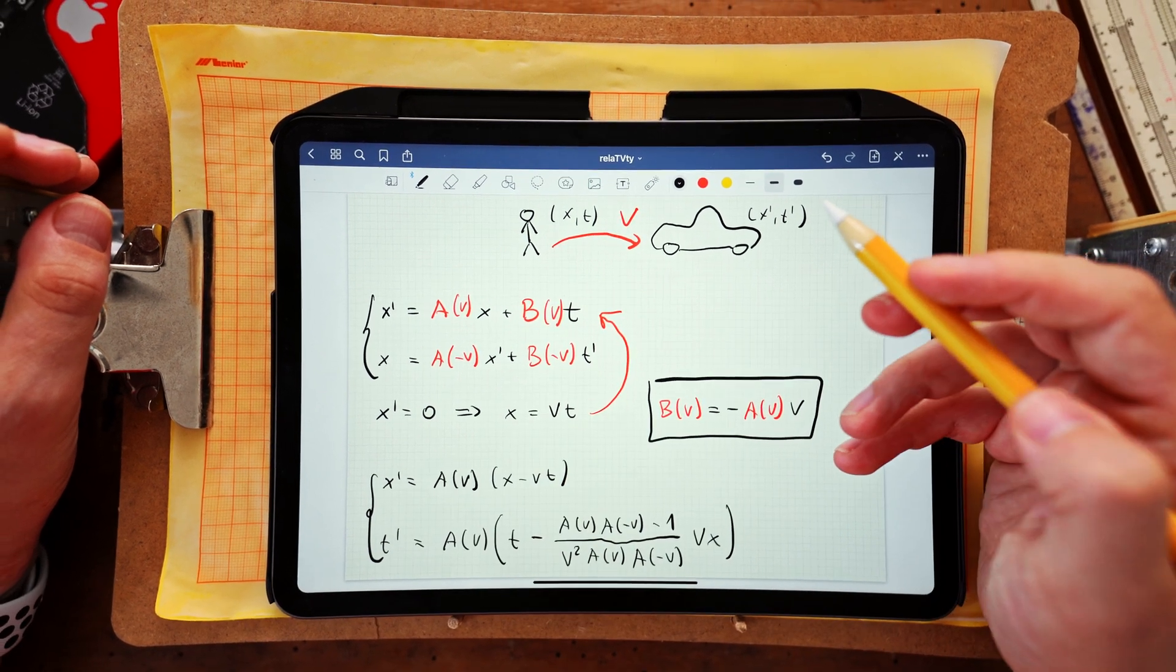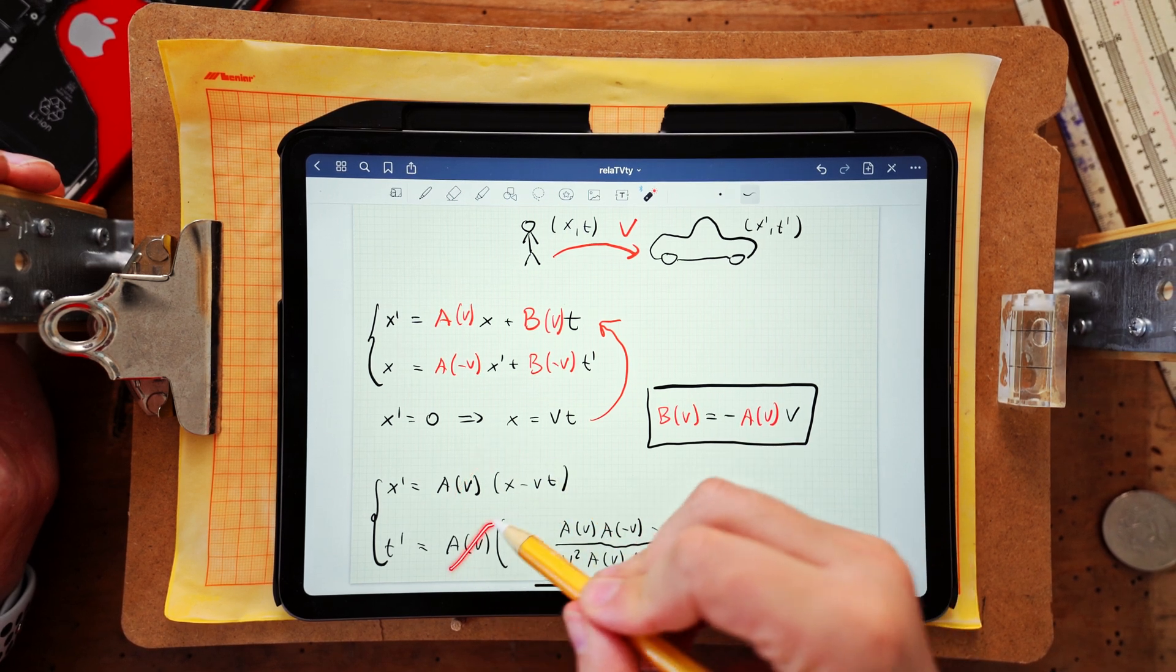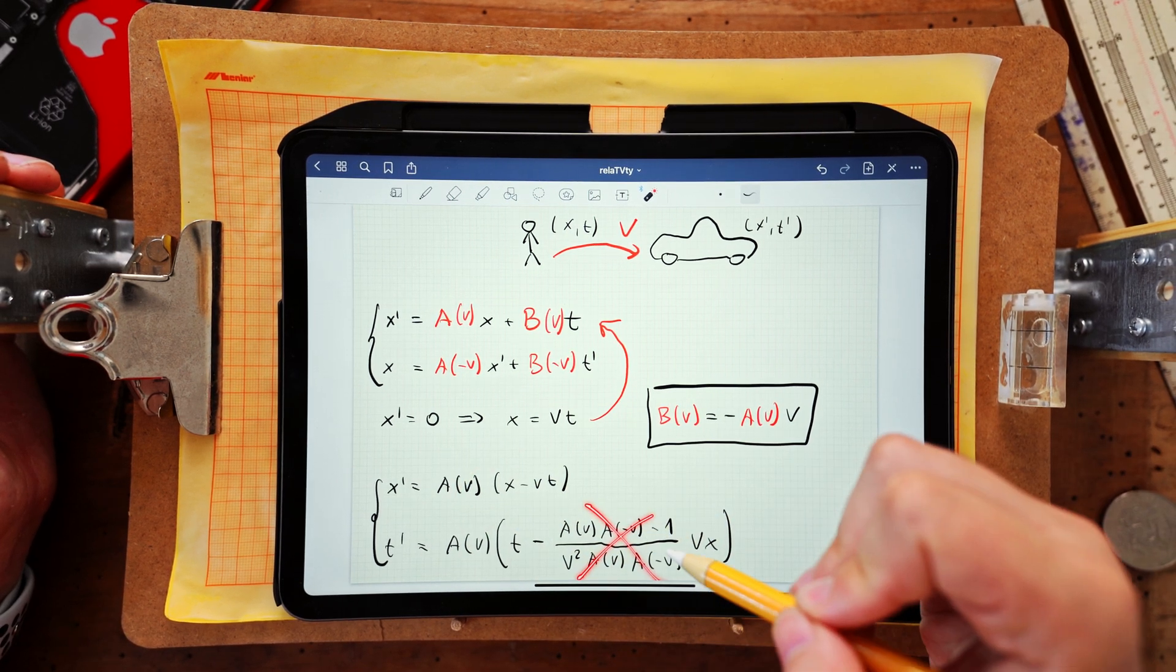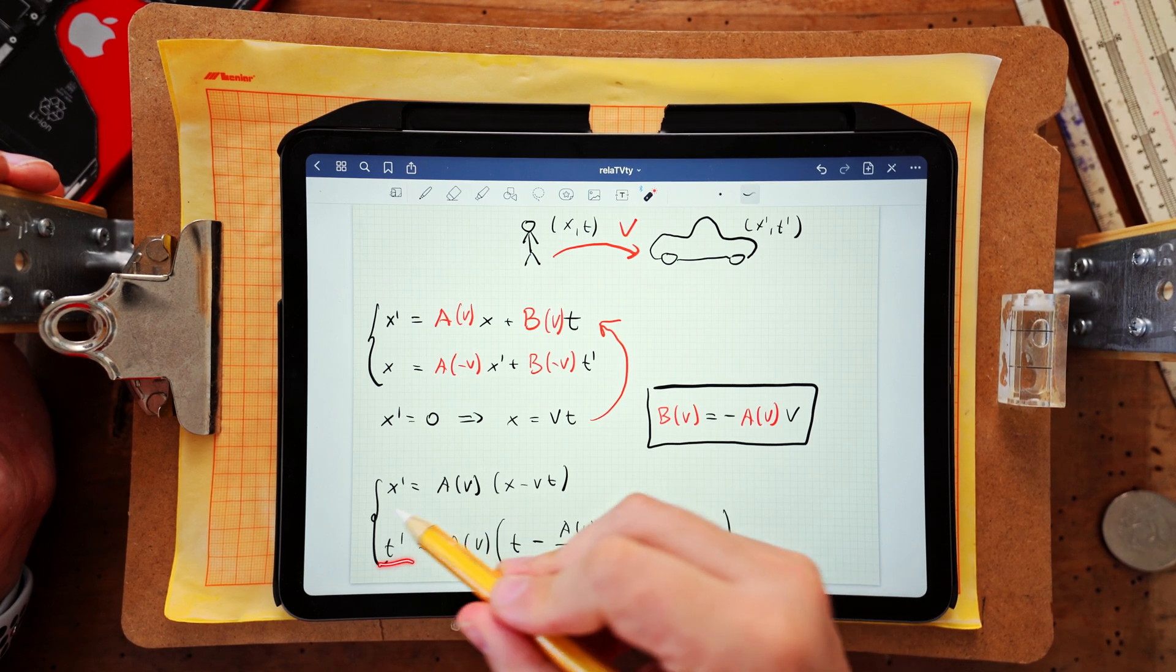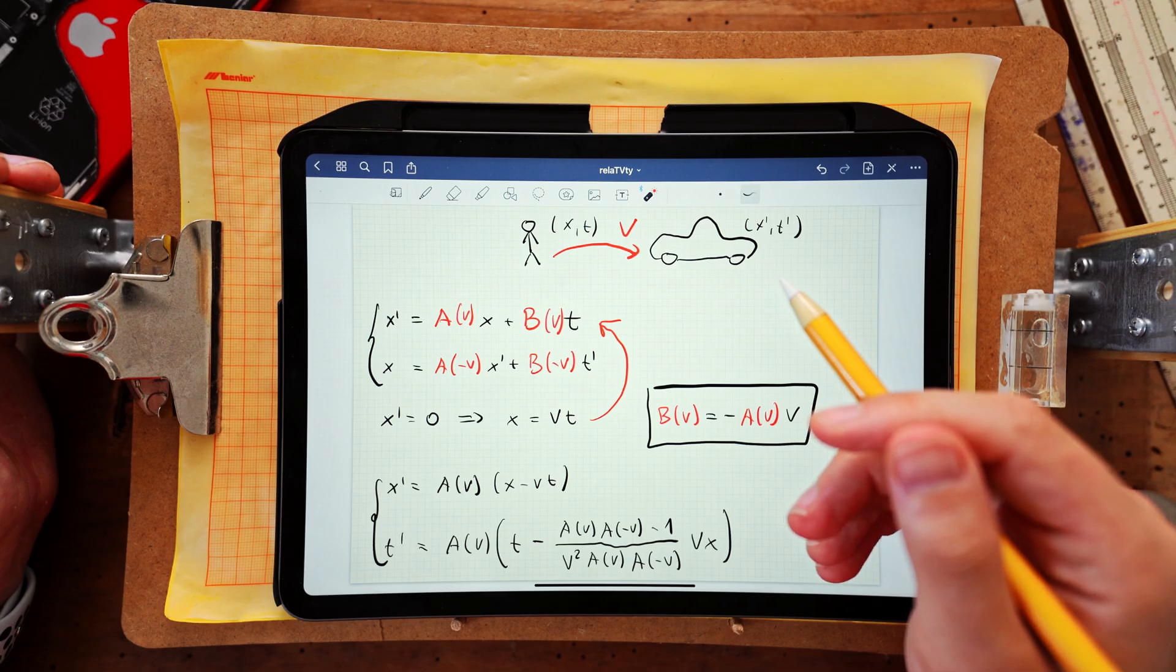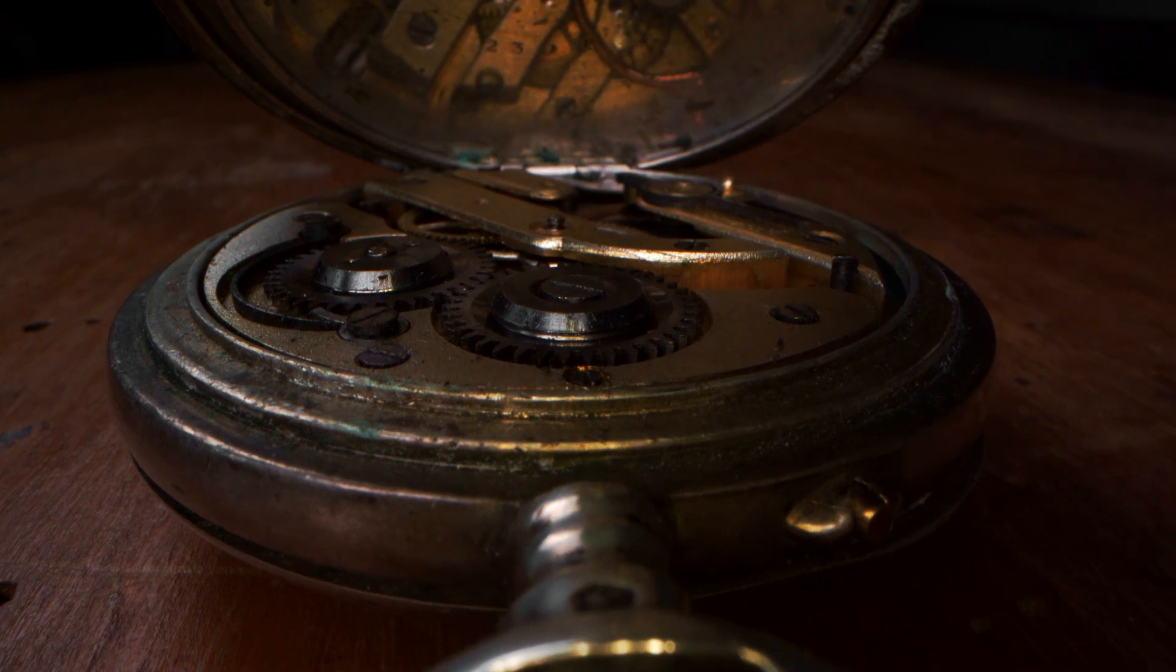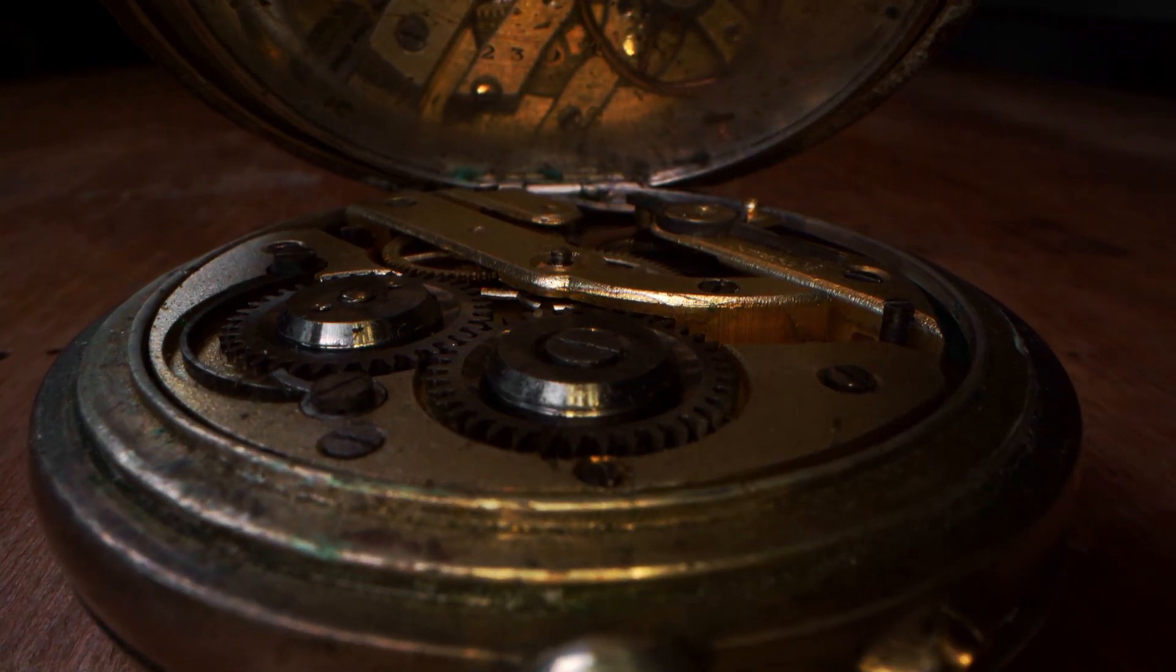So notice that the simplest solution to our problem corresponds to a equal to 1 which makes the transformation for time trivial. t' simply equals to t. And in that case x' equals x minus v times t which is simply a Galilean transformation. But obviously our task is to find the most general transformation formulas.